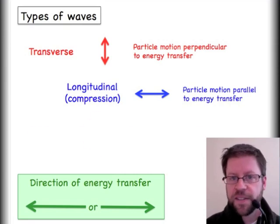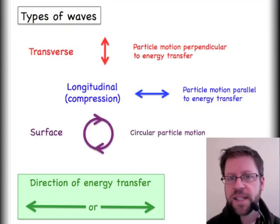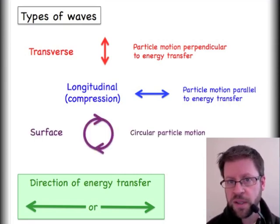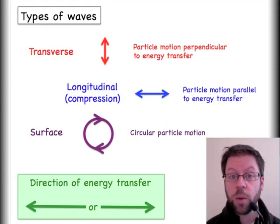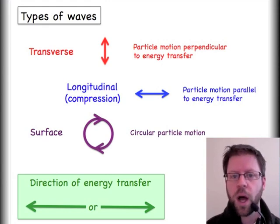A third classification is a surface wave. It's neither in the vertical or horizontal. It's a combination of all these things. It's a circular pattern that the particles will make as the wave travels by. Your best example of a surface wave is going to be an ocean wave or something in the water.